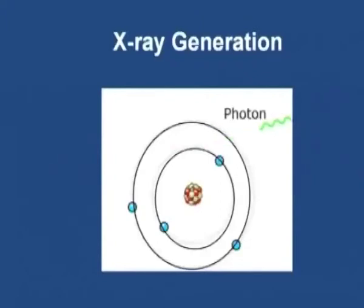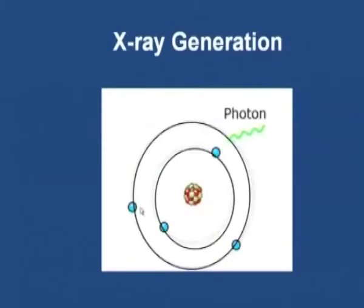Bragg's law tells you that atoms are arranged periodically in a regular pattern in any solid. You have a plane with atoms arranged periodically, and another plane below it. The distance separating the two planes is called the interplanar spacing. This interplanar spacing can be obtained from Bragg's law, and this distance can be measured using X-rays.